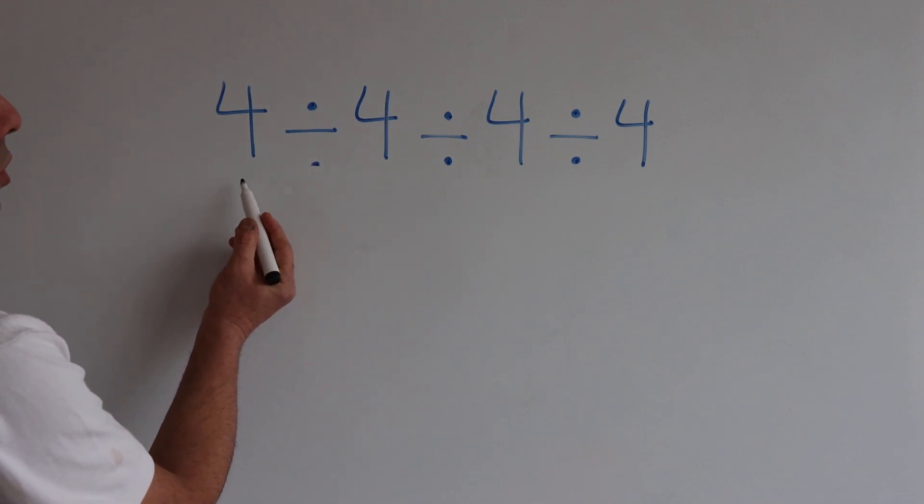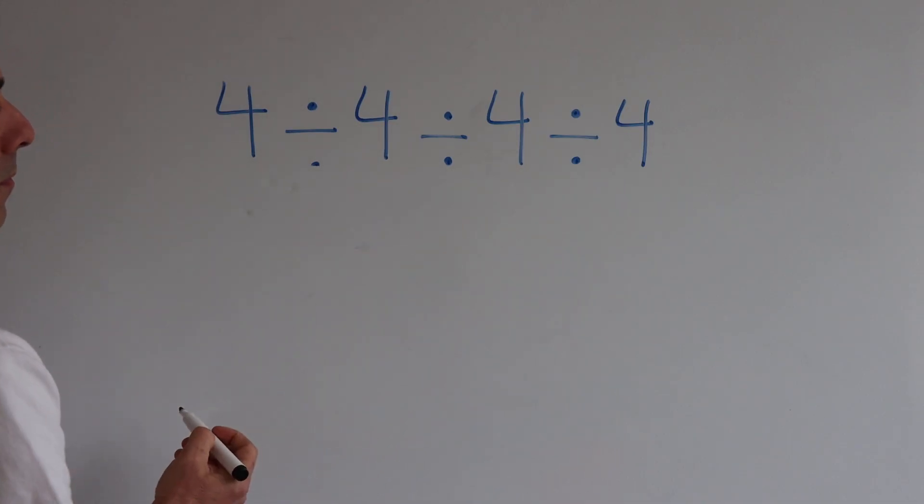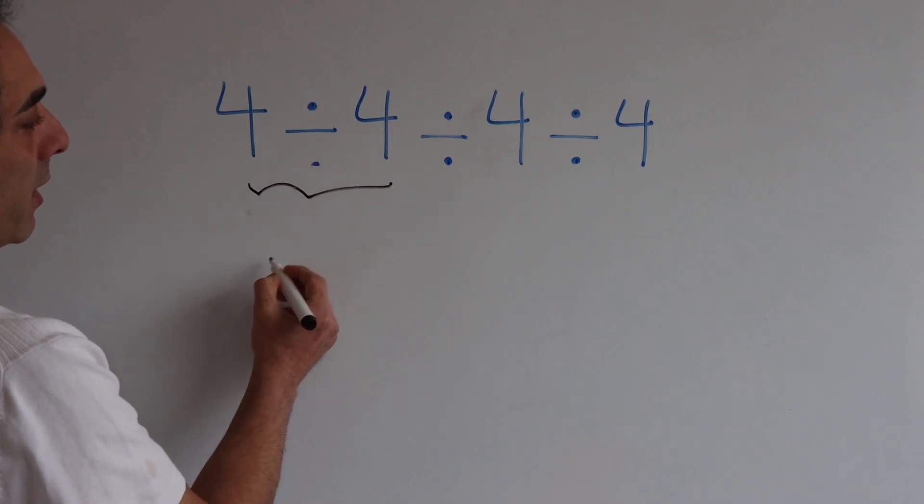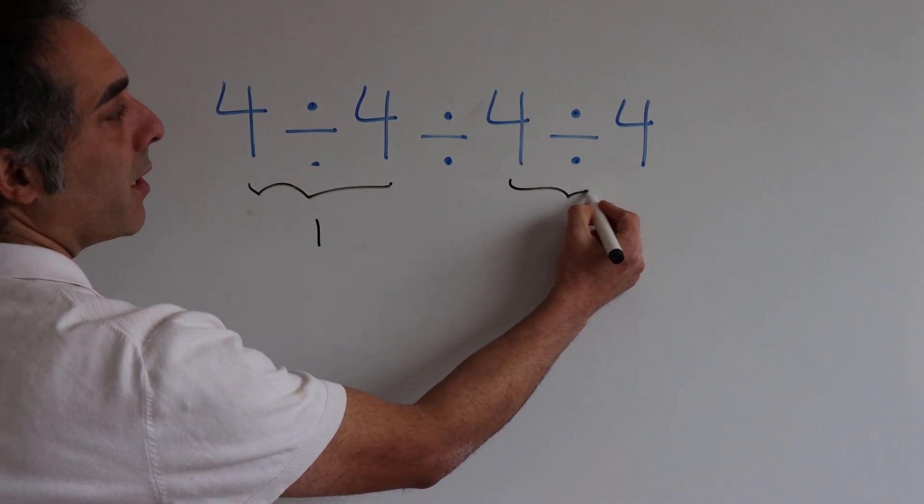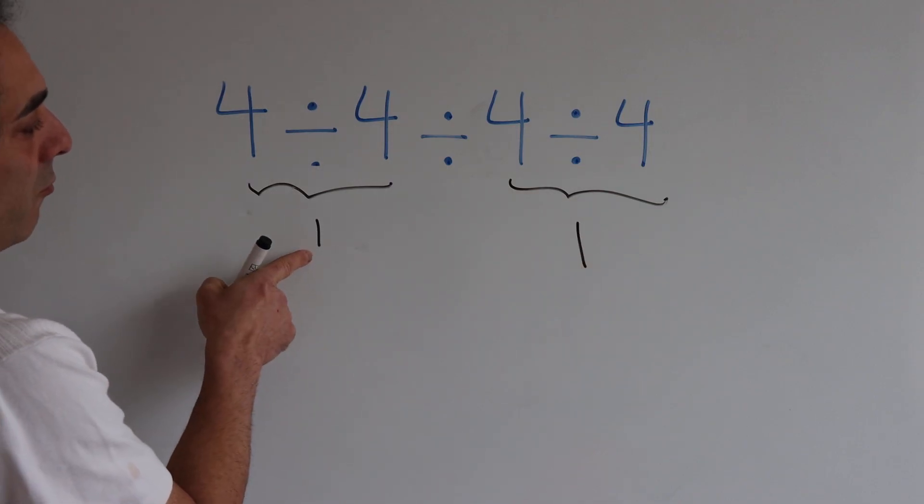Here I want to find the solution of this calculation: 4 over 4 over 4 over 4. Maybe you can calculate it like 4 over 4 is 1, and here again 4 over 4 is 1, and then 1